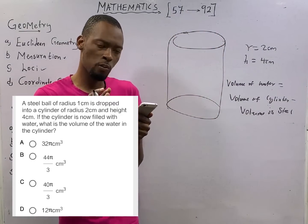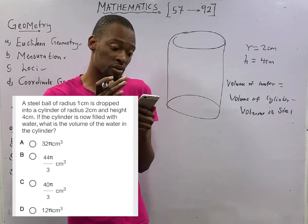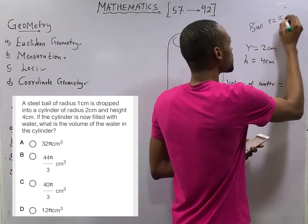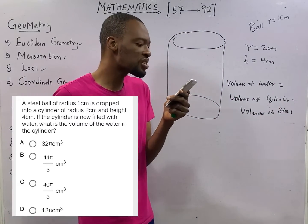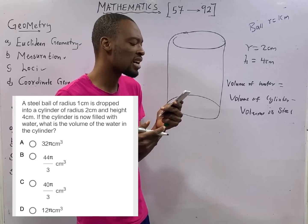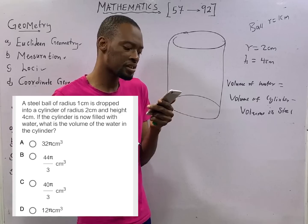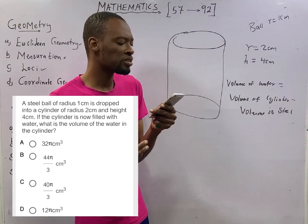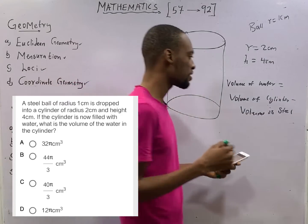A steel ball of radius 1 cm is dropped into a cylinder of radius 2 cm and height 4 cm. What is the volume of water in the cylinder? A steel ball, the shape is obviously a sphere. Ball is spherical. This is sphere.